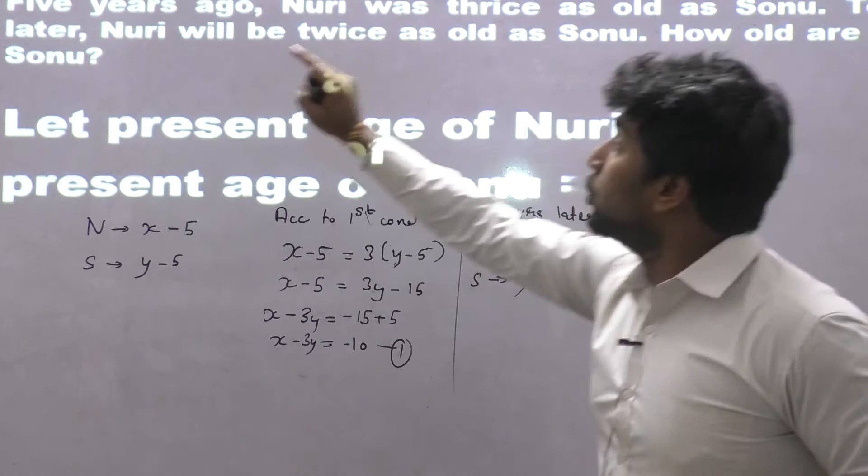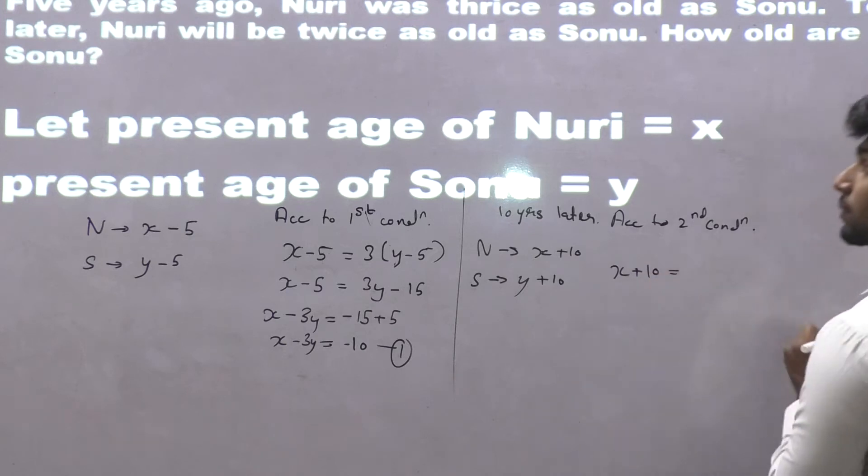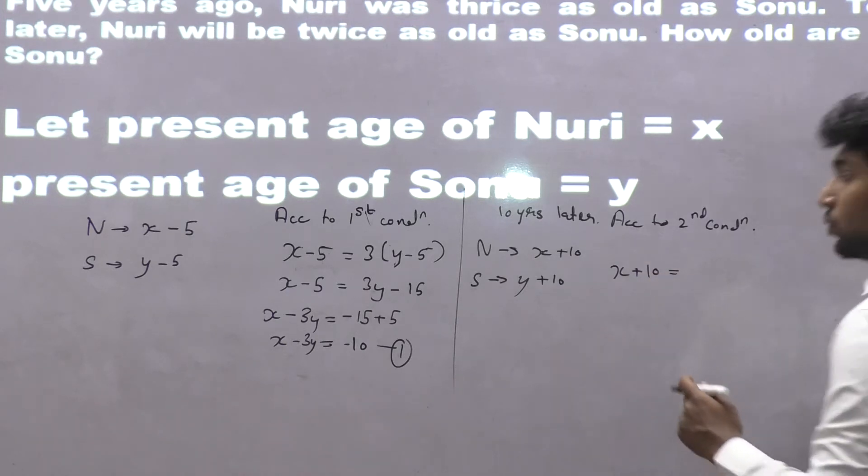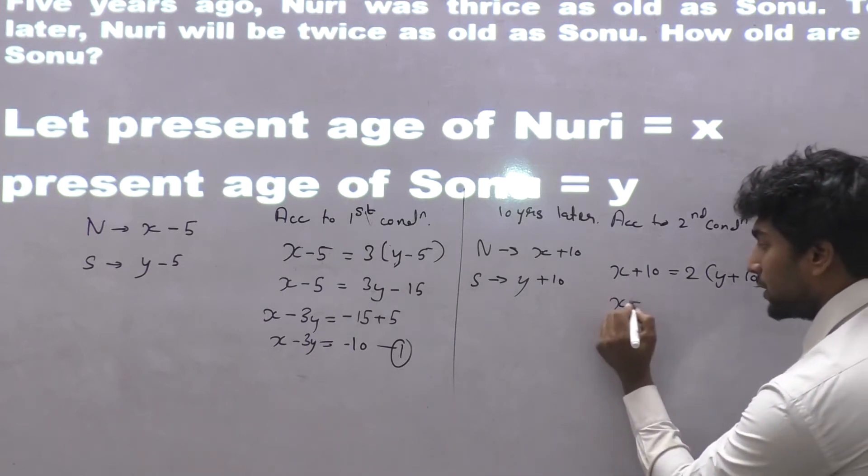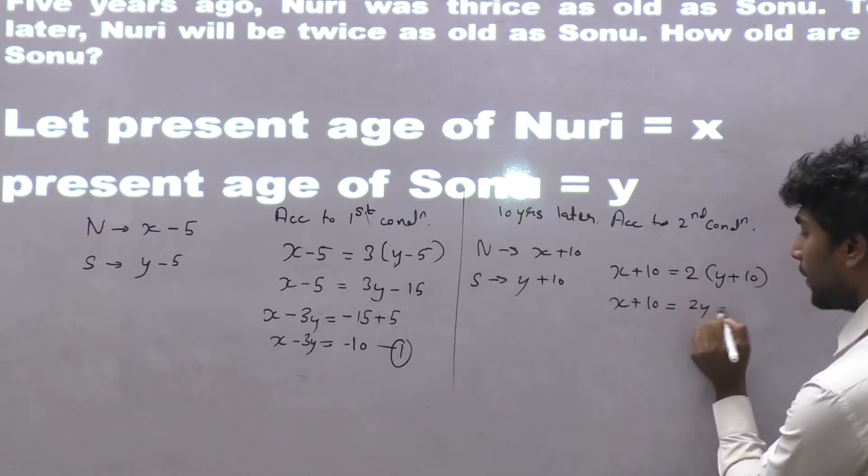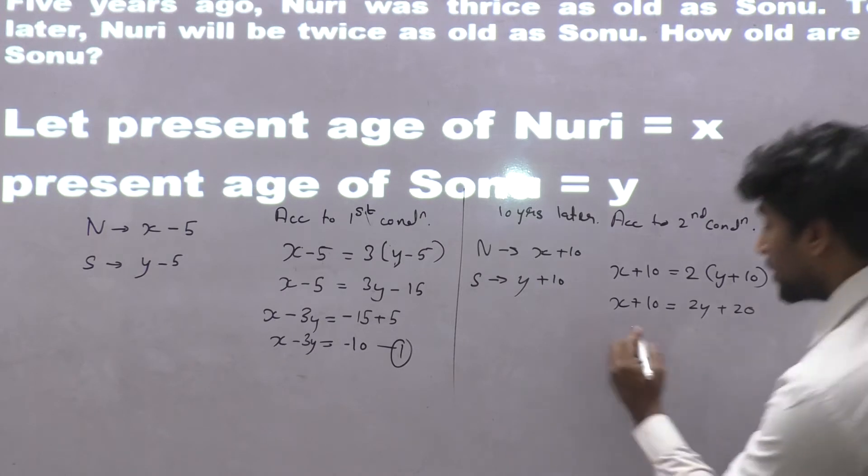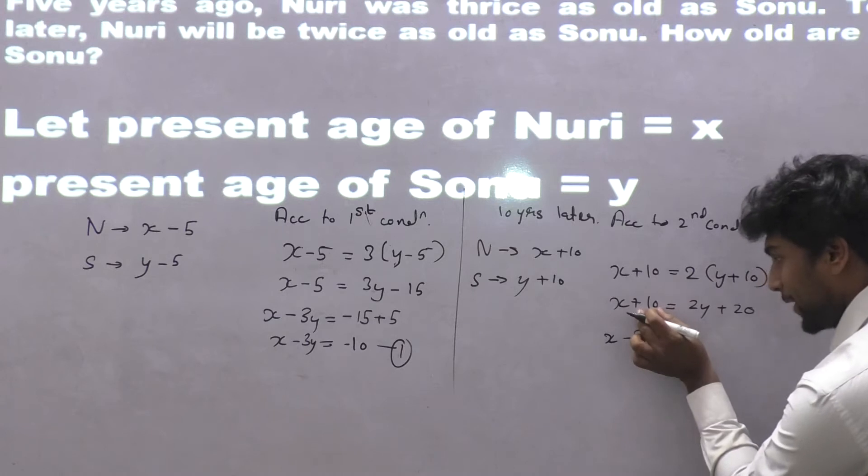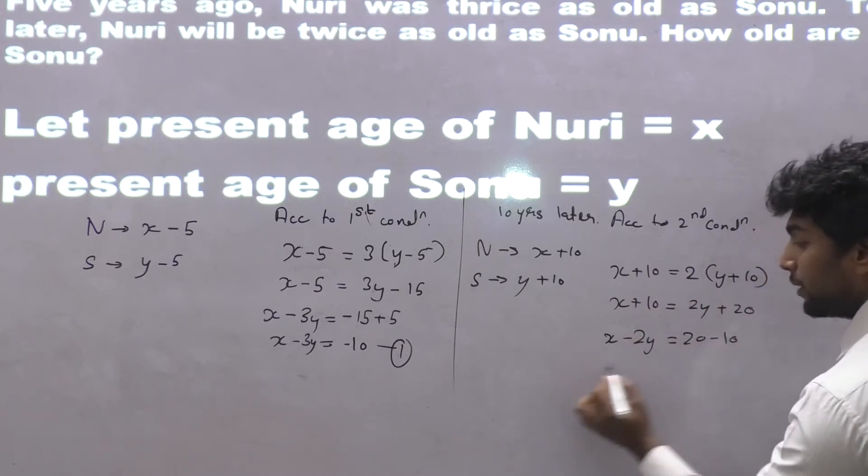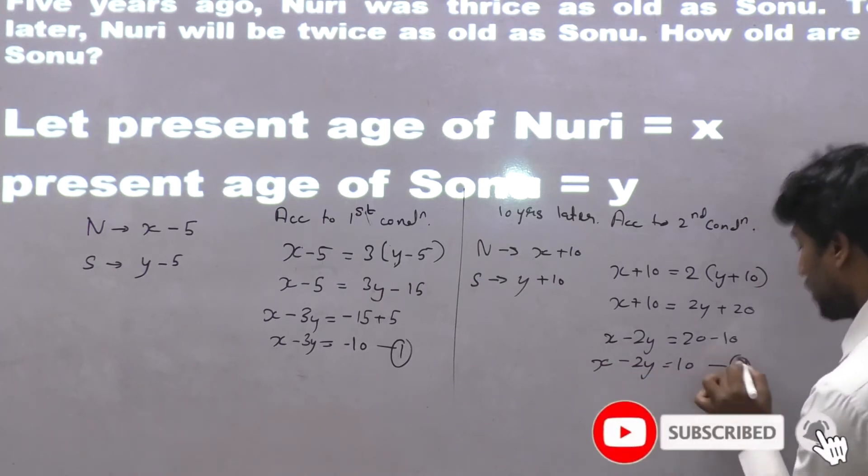Nuri's age, which is x plus 10, will be equals to twice as old as Sonu, which is 2 into y plus 10. So x plus 10 equals 2y plus 20. Again, variables on one side and constants on the other side. x minus 2y equals 10. Marking this as equation number 2.